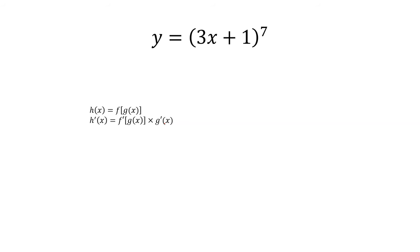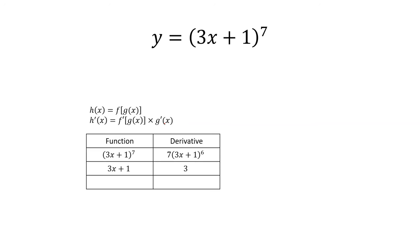One thing about these problems that I have found trips students up is the fact that sometimes it's a lot to keep track of, especially as the problem starts to expand and you end up with quite a few chains. So one thing I do — and as you get used to it, you probably won't use this tool anymore — is just make a little table for yourself. Here I identify all my functions and their respective derivatives. So here you've got 3x plus 1 raised to the 7th power — that's one function. Its derivative as an exponential function is 7 times, leave the inside alone, raised to the 6th power. The next function is actually the quantity within the parentheses, which is 3x plus 1. And its derivative is just 3. So now you have the functions and the derivatives, and it's just a question of plugging into the template.